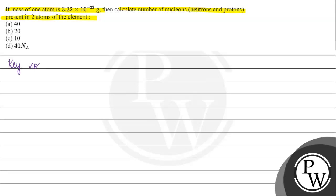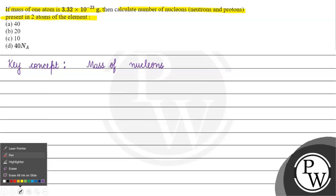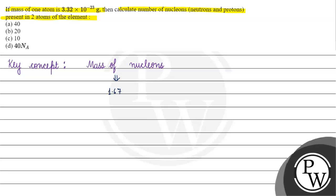The key concept for this question is mass of nucleons. So what are nucleons? Nucleons are neutrons plus protons. But if we talk about the mass of nucleons, what is it? 1.67 × 10 to the power minus 24 grams.